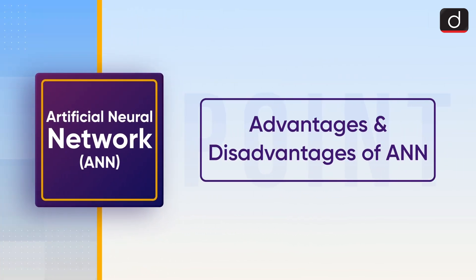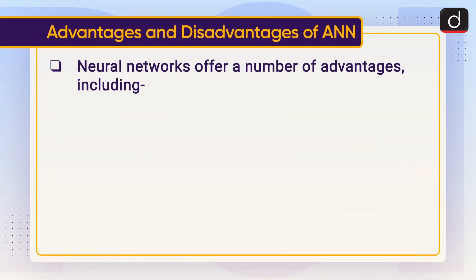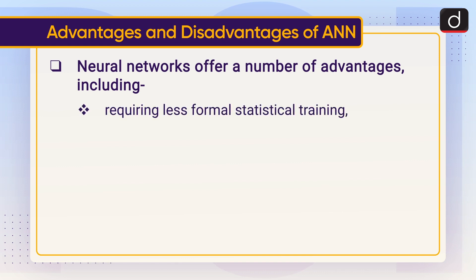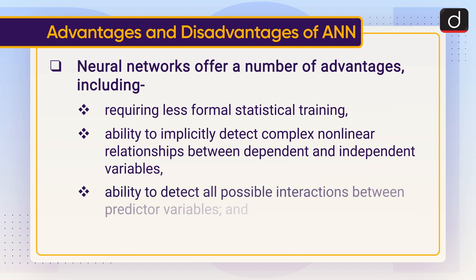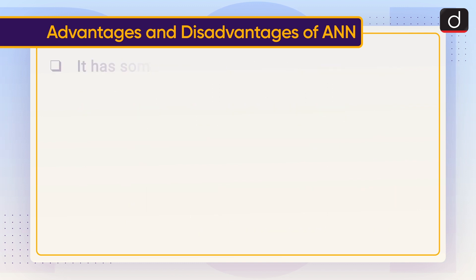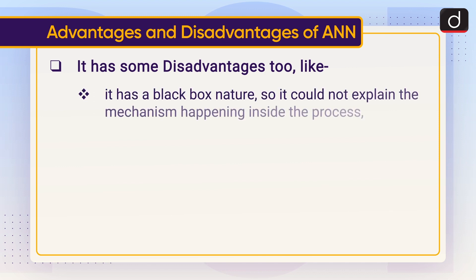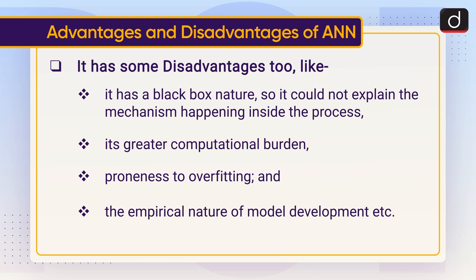Now let's discuss about the advantages and disadvantages of ANN. Neural networks offer a number of advantages, including requiring less formal statistical training, ability to implicitly detect complex non-linear relationships between dependent and independent variables, ability to detect all possible interactions between predictor variables, and the availability of multiple training algorithms. It has some disadvantages too, like its black box nature, meaning it cannot explain the mechanism happening inside the process, its greater computational burden, proneness to overfitting, and the empirical nature of model development.